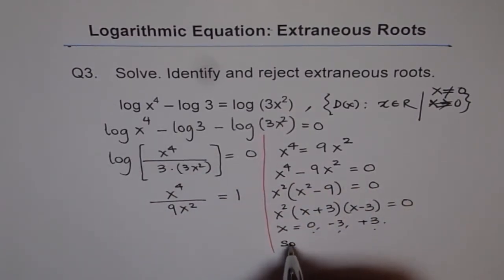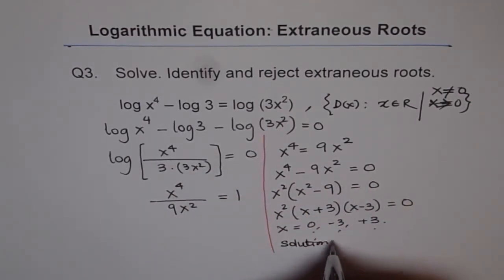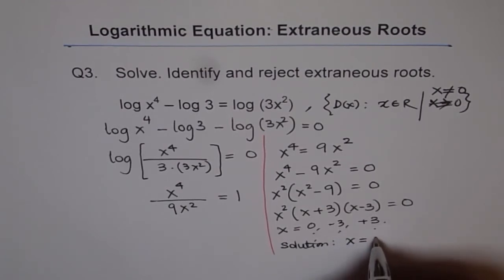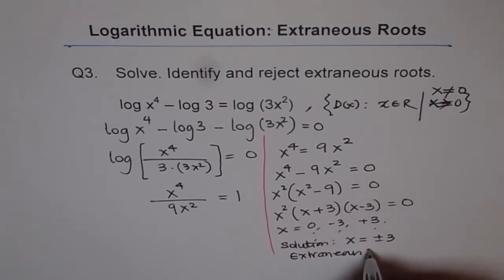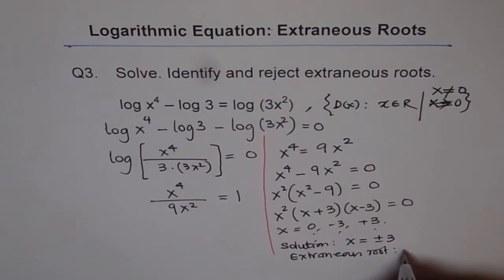Now, so our solution is x is equal to plus and minus 3. And the extraneous root is x equals to 0. So that is our solution for the given equation. Thank you.